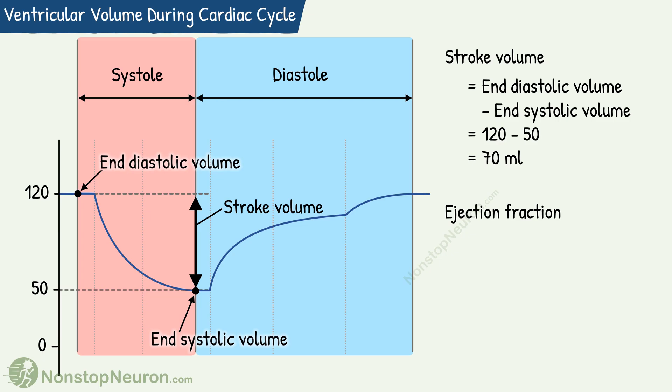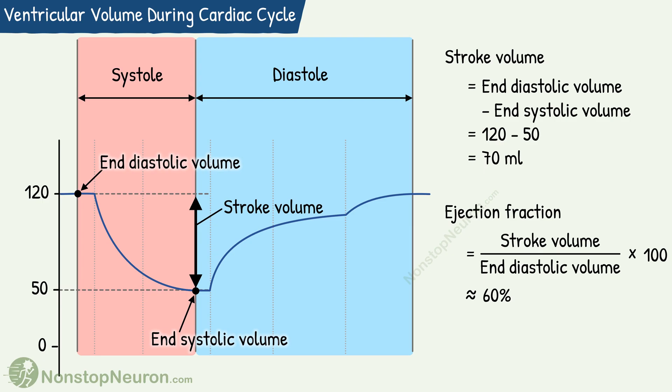Finally we have ejection fraction. It is the fraction of end diastolic volume that is ejected during each heartbeat. Ejection fraction = stroke volume divided by end diastolic volume, multiplied by 100. Normally it is about 60%, meaning that out of the total blood in the ventricles at the end of diastole, 60% is ejected during systole.